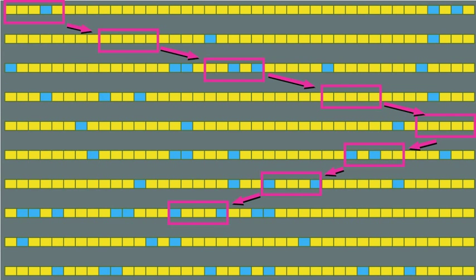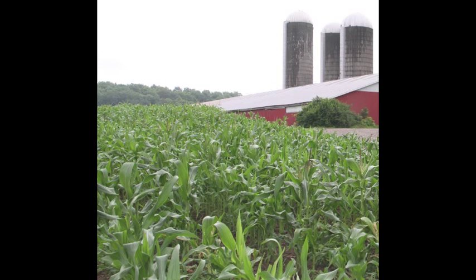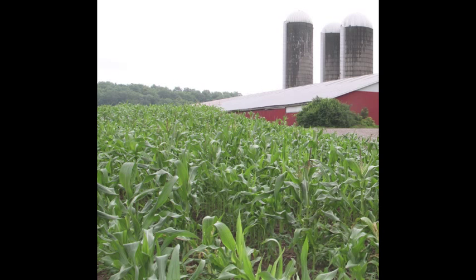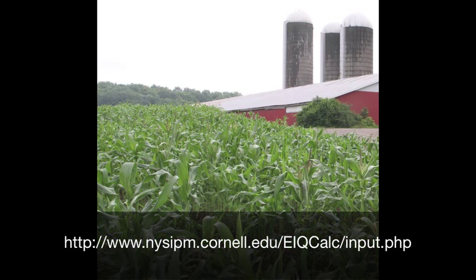By scouting in a V-shaped pattern, we ensured a representative sample of the entire field. Extrapolating this out to the entire field gives us a good indication of what the entire field may look like had we scouted every individual corn plant. Now that we know that treatment may be necessary, you will need to decide the best course of action. Please refer to Cornell's vegetable guidelines for sweet corn, and use the eIQ calculator to help decide on the pesticide that is least harmful to beneficial insects and the environment.